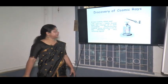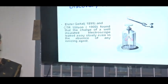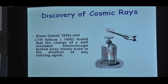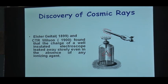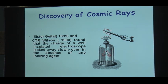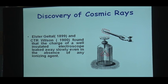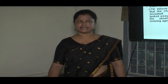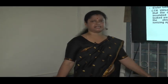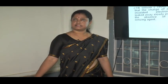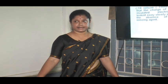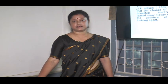First, let us see how cosmic rays were discovered. Elster and Gattel in 1899 and C.T.R. Wilson in 1900 found that the charge of a well-insulated electroscope leaked away slowly even in the absence of any ionizing agent. At first, it was thought that the discharge of this electroscope was due to the presence of radioactive radiation from the Earth's surface.